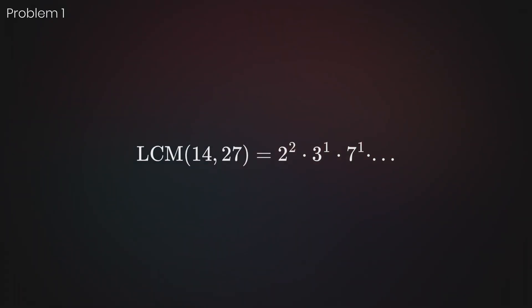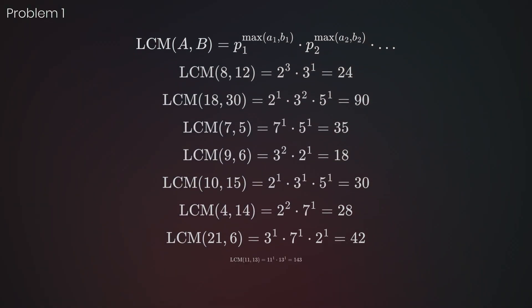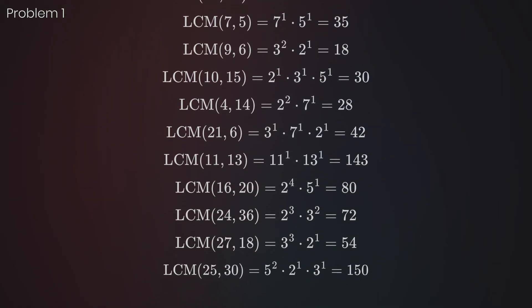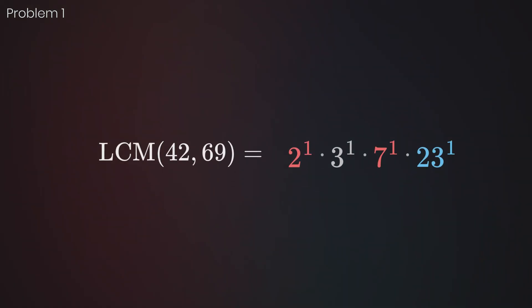The LCM will be each prime raised to its maximum exponent. Since any natural number raised to the power of 0 equals 1, if a prime doesn't appear in the other number, the power will default to 0. After multiplying these numbers, we get the correct answer of 966.